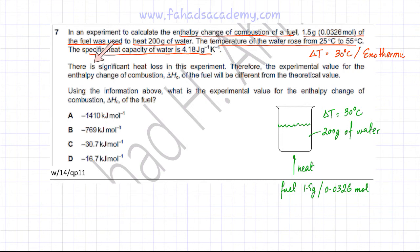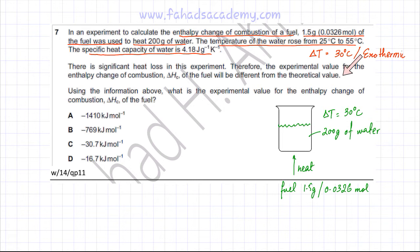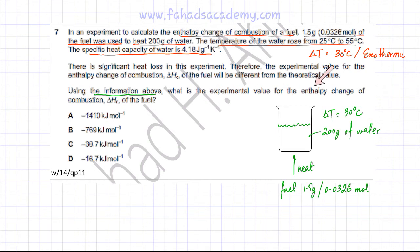The question states that there is significant heat loss in this experiment, which means it is not very accurate. Therefore, the experimental value for the enthalpy change of combustion of the fuel will be different from the theoretical value, because a lot of heat loss is taking place. Using the information above, what is the experimental value for the enthalpy change of combustion of the fuel?